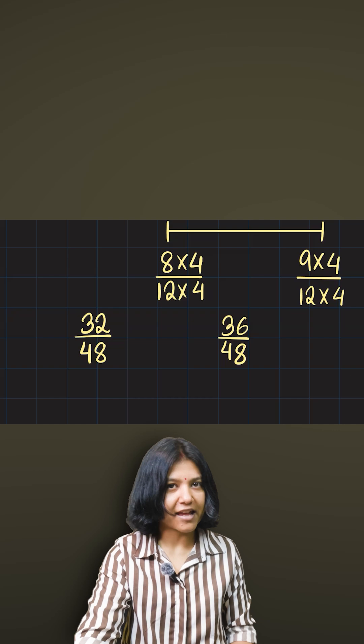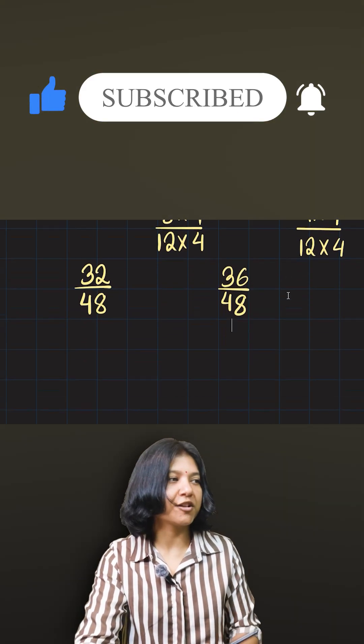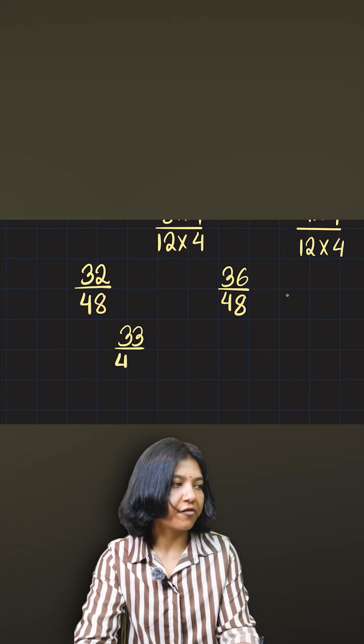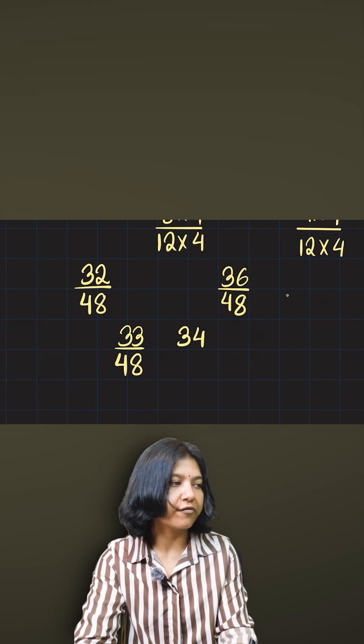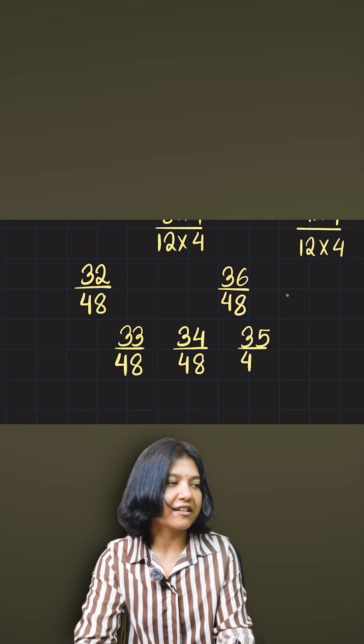What do I get? I get 32/48 and 36/48. So now I can insert exactly the numbers they told me to find. Between 32 and 36, what lies?